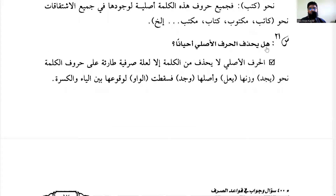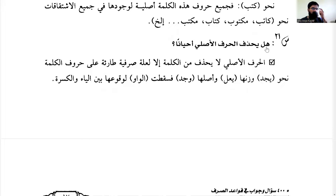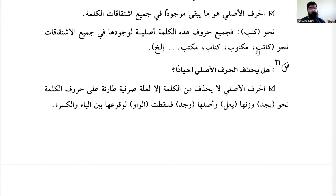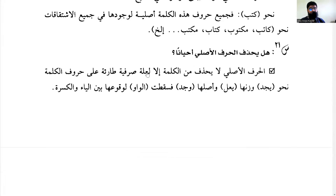We talked about how in a word there are two types of letters. One is harf asli, which is the original root letter, and the other is harf za'ida, which is the extra letter — za'ida.